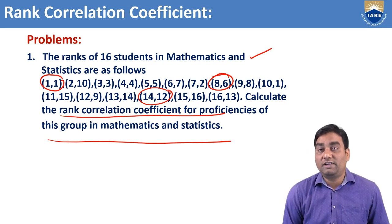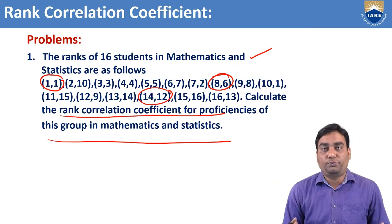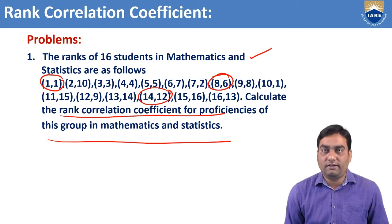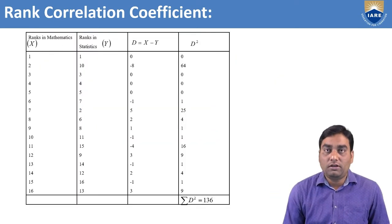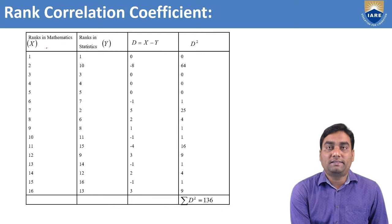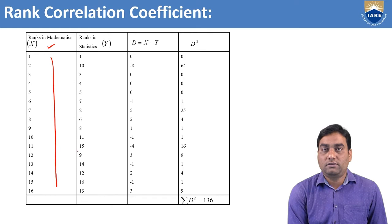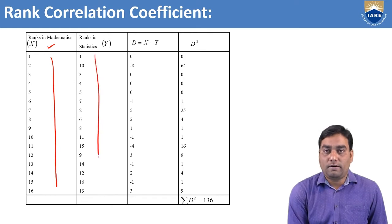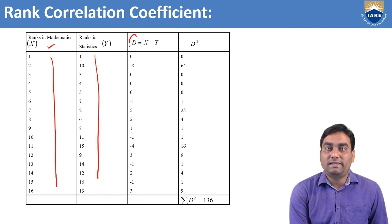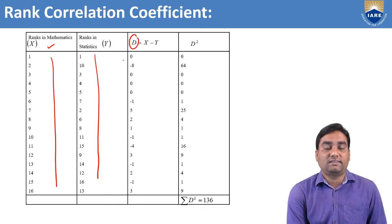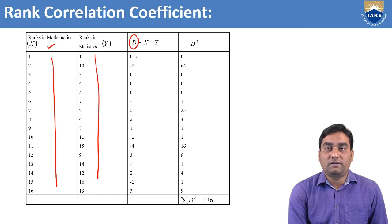We need to find the strength of the relation between mathematics and statistics in this group. All the ranks are given. First, write the table with ranks in mathematics (assume x) and ranks in statistics (assume y), from 1 to 16. Then find d — the difference between ranks. For example: 1 minus 1 equals 0; 2 minus 10 equals minus 8.